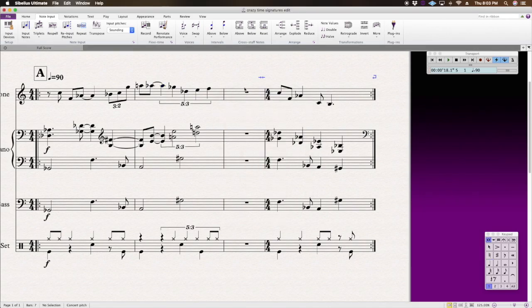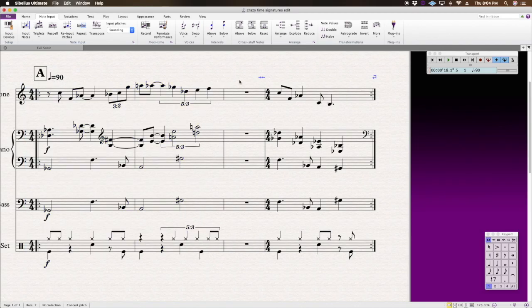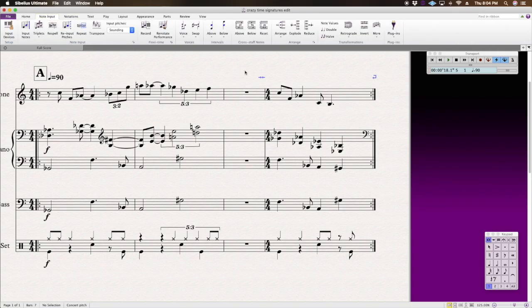The first thing we have to do is establish our base tempo because irrational time signatures are meaningless out of context. That's why I wrote a couple measures at quarter note equals 90. So we're going to establish 90 as our base tempo. So I decided after some experimentation that it would make the most sense to write a bar of 6/8 to display the music the way that I want it to look. So I created a bar of 6/8, then I immediately hide that time signature because we never want to see that again.